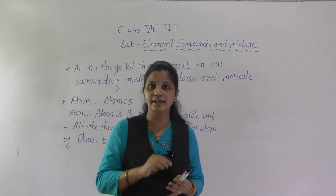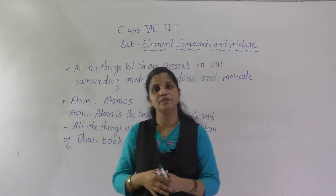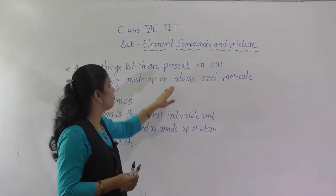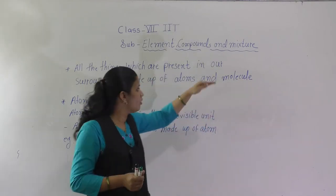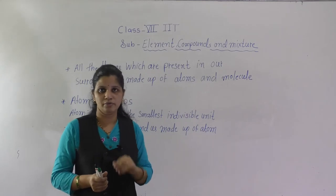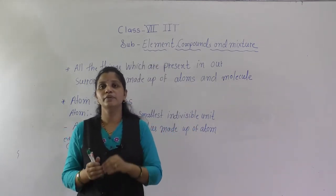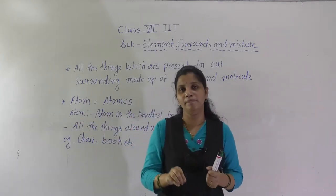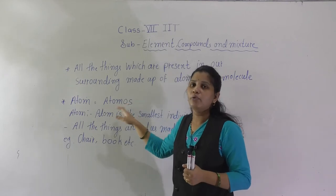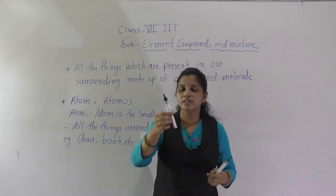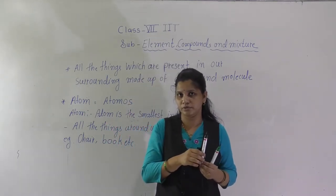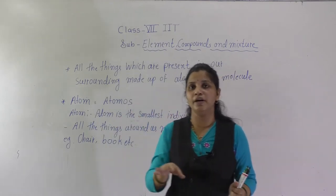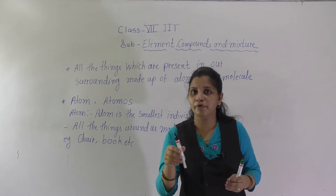Any substance present around us is known as matter, and all matter is made up of atoms and molecules. What exactly are atoms and molecules? Atoms are the very smallest substance. The word 'atom' comes from the Greek word 'atomos,' which means indivisible. This pane is also made up of atoms and molecules. The atom is the very smallest part of any substance.